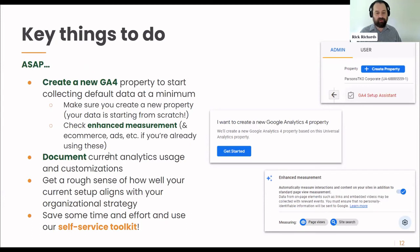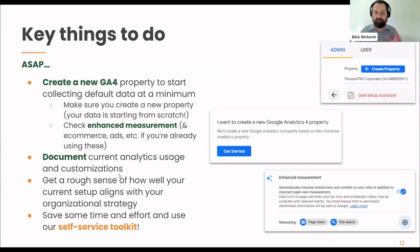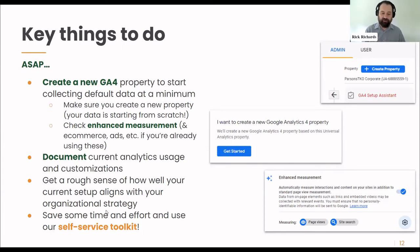As soon as possible, document your current analytics usage and your current customizations. Really take a look at what your organization is doing right now — how are people using it on a daily, weekly, monthly, yearly basis? What's happening and what might you possibly have to recreate when you move to a new platform? Also get a rough sense of how well your current setup aligns with your organizational strategy. Is it collecting data in a way that makes sense to your organization, or are you just bending to Google's defaults? Get a sense of what the temperature is there.